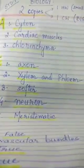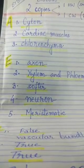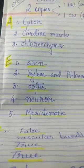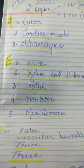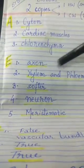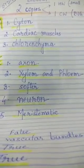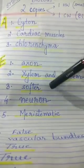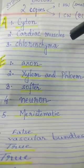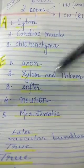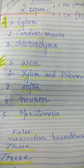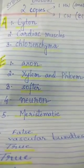Subpart E, fill in the blanks. A long cylindrical process arising from the cytone is called axon. Xylem and phloem are forms of complex tissue. Parenchyma is present in the softer regions of the plant. A nerve cell is called a neuron. Meristematic tissue is situated at the tip of root and stem and helps in growth of the plant.